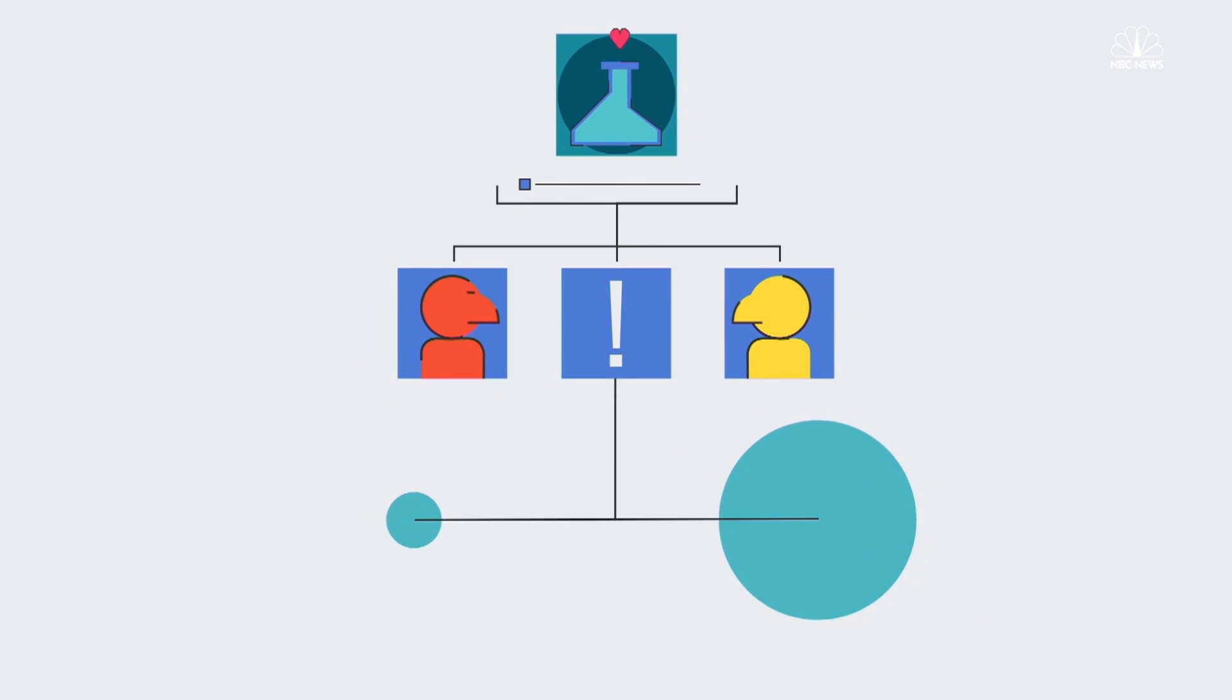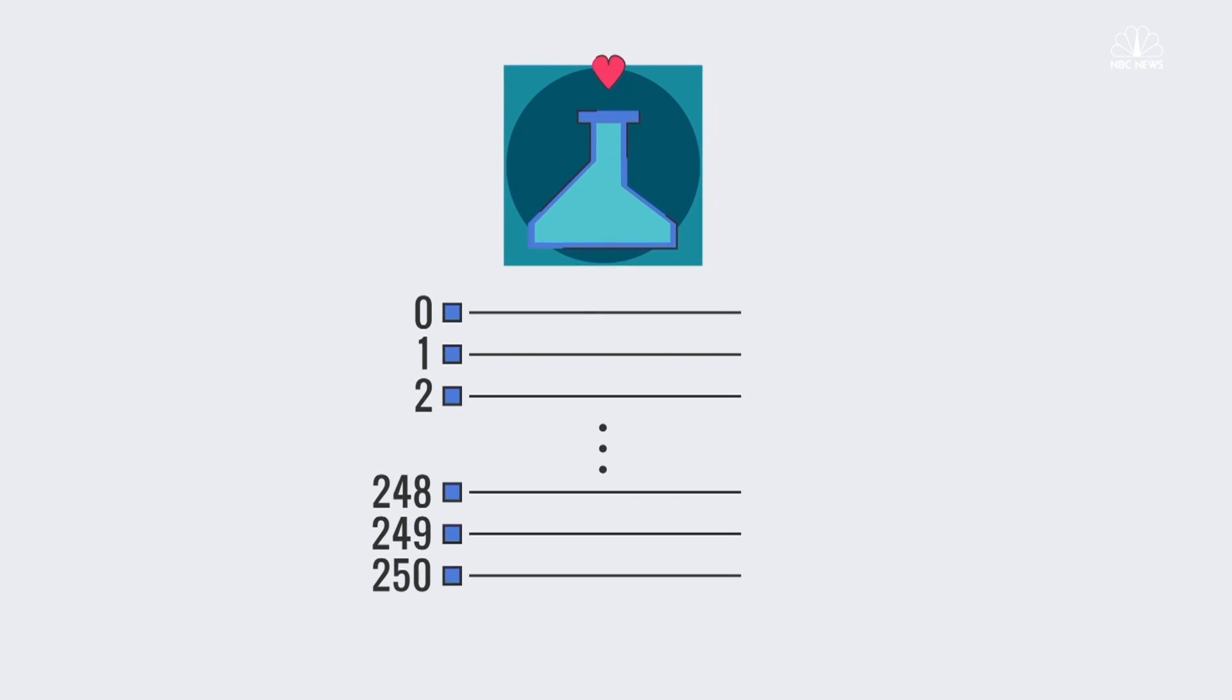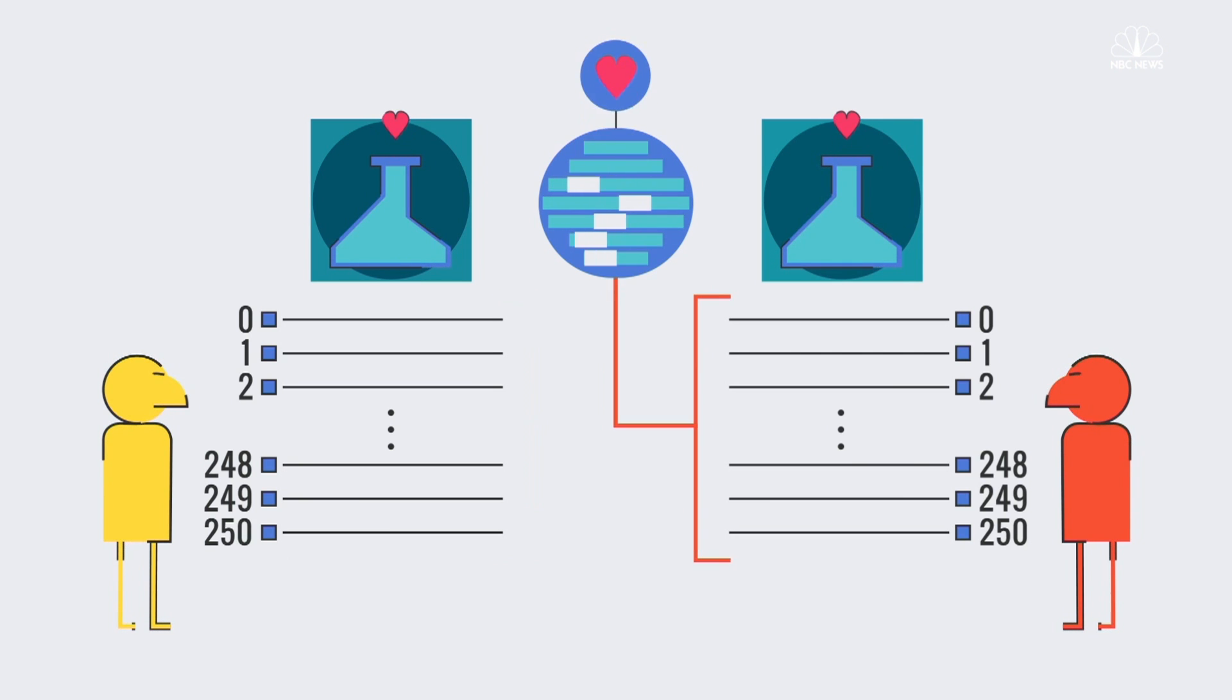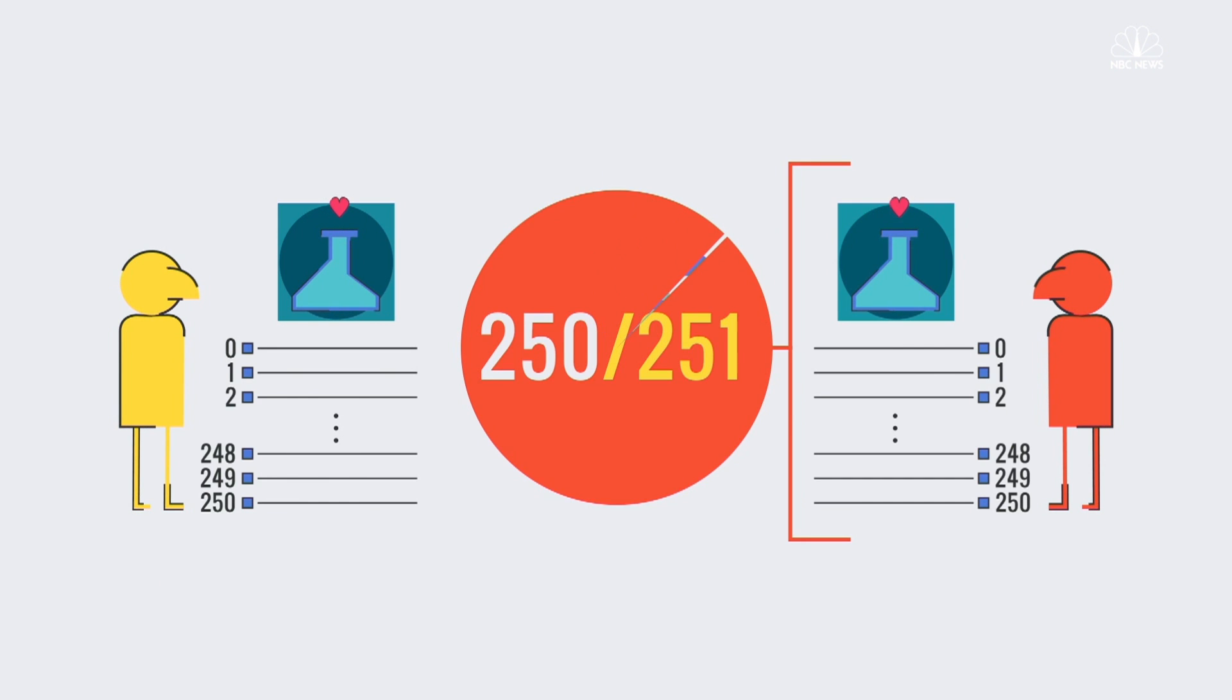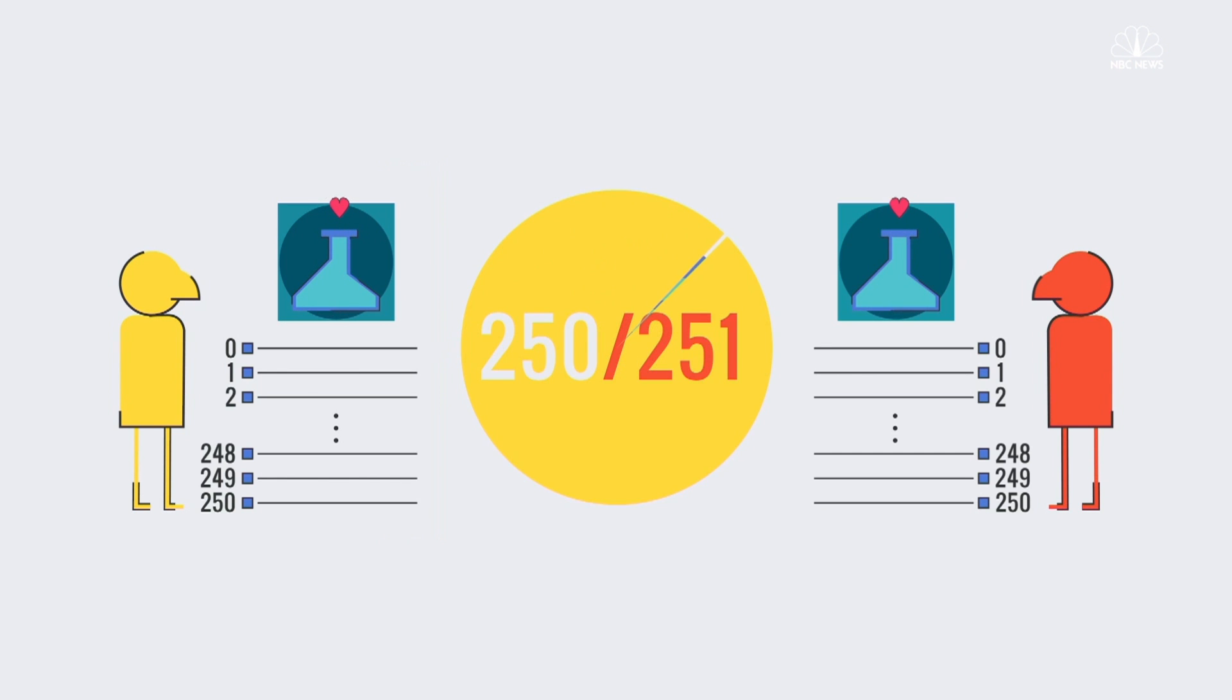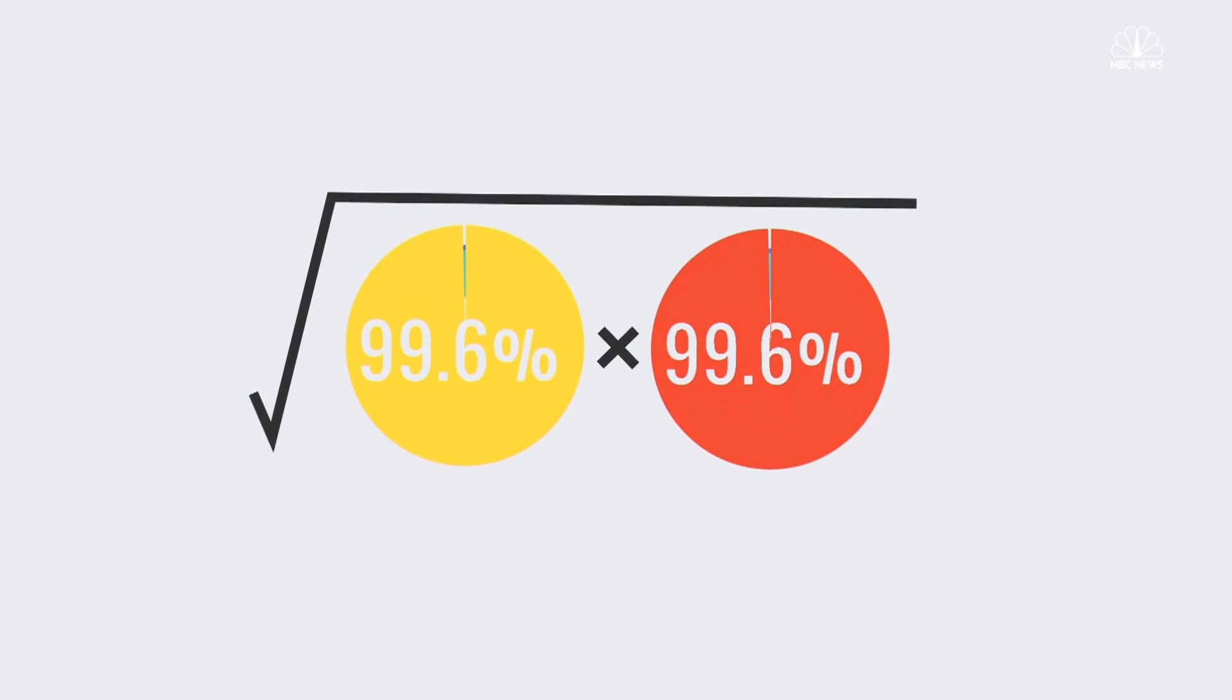OkCupid assigns numerical values to these ideas on a scale of 0 to 250, and the algorithm assesses how much your match's answers made you happy, and vice versa. So, if your match's answers earned 250 out of 251 possible points based on your preferences, that's 99.6% satisfactory. The same calculation is done for your answers compared to your match's preferences. Multiply these two satisfaction numbers, take the square root, and that's your match percentage.